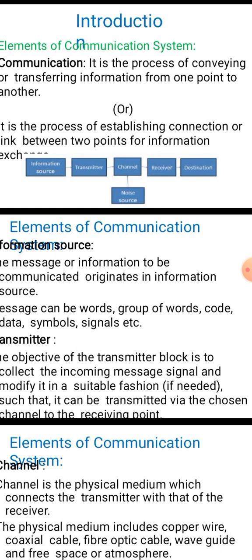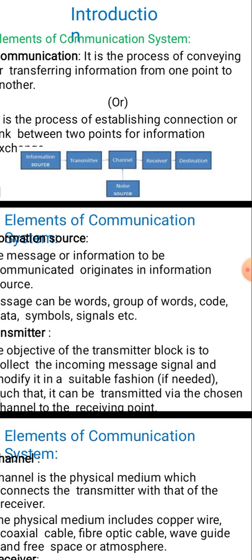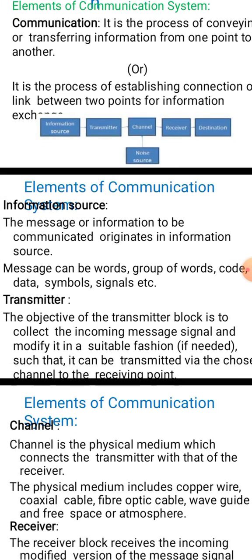The modulated or transmitted signal is passed through a channel or transmission medium. The receiver block consists of a demodulator — the opposite process of modulation. If the communication is digital, there will also be a digital-to-analog converter, and finally the signal is delivered to the destination.